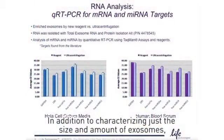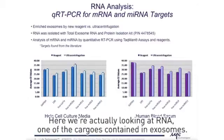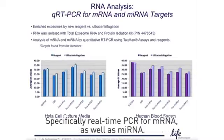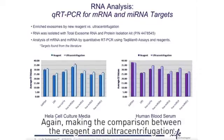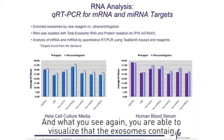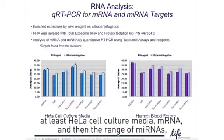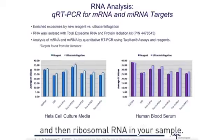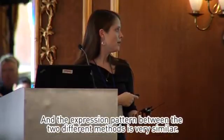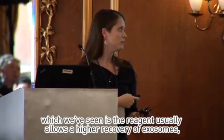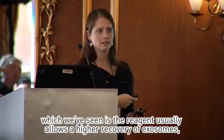In addition to characterizing just the size and amount of exosomes, you also want to look at the cargo. Here we're looking at RNA — one of the cargos contained in exosomes — specifically real-time PCR for mRNA as well as microRNA, again looking at serum and cell culture media, and comparing the reagent to ultracentrifugation. You are able to visualize that the HeLa cell culture media exosomes contain mRNA, a range of microRNAs, and ribosomal RNA. The expression pattern between the two different methods is very similar, although you do see a slight improvement for the reagent, which usually allows a higher recovery of exosomes.